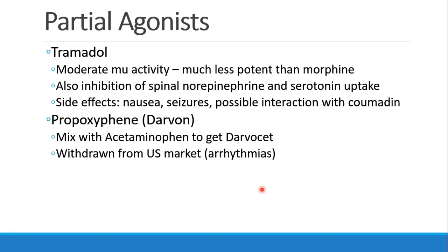Tramadol was for a while thought to be not really an opioid, but in fact it does have moderate mu-receptor activity. It's still much less potent than morphine, but it has other actions including inhibition of spinal norepinephrine and serotonin uptake. Some of its side effects include nausea, seizures, and possible interaction with Coumadin. Finally, propoxyphene, or Darvon, is a drug that you are unlikely to see much anymore. It was mixed with acetaminophen to get Darvocet, and it's been withdrawn from the U.S. market due to an increased risk of arrhythmias.